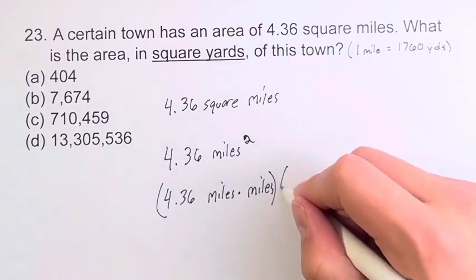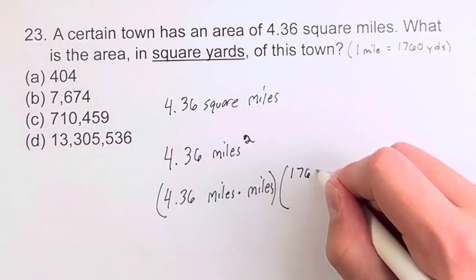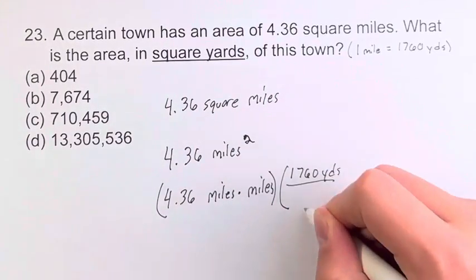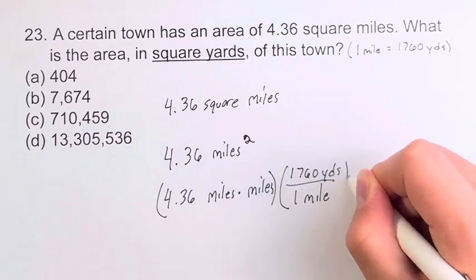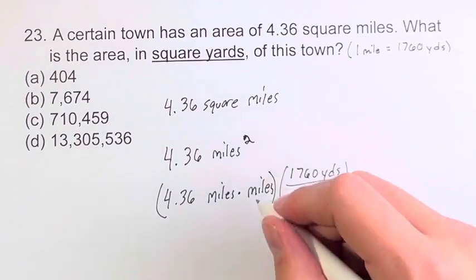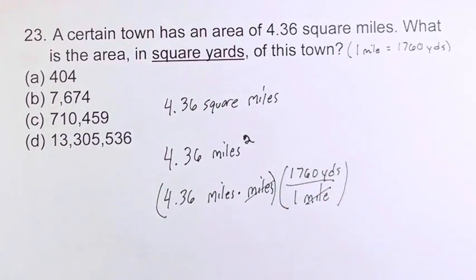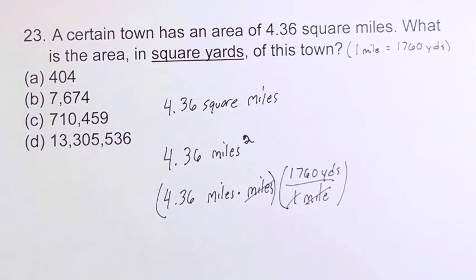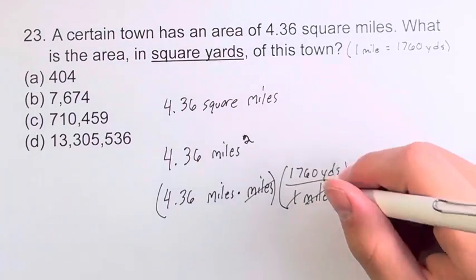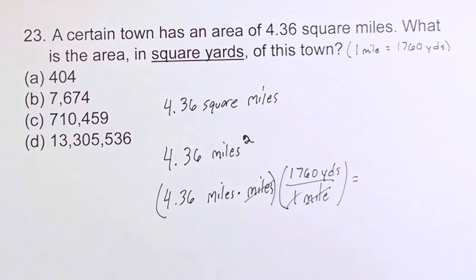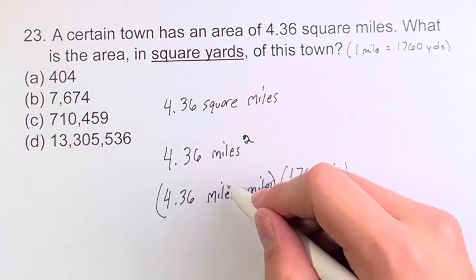So we're taking this, or multiplying it by 1760 yards over one mile. We do this out, and these miles cancel. And the one cancels, since dividing by one doesn't change the actual value of the number. However, we still have one of the miles here.